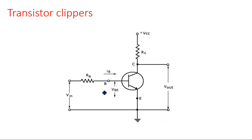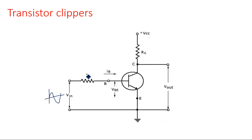This is the configuration used for the clipping circuit. The input signal is applied at the base of the transistor in the common emitter configuration, where the emitter terminal is common between input and output. The input voltage is applied between base and emitter, and the output voltage is taken across collector and emitter. RB is the current-limiting resistor at the base, and RC is the resistor used to drop the voltage from VCC.